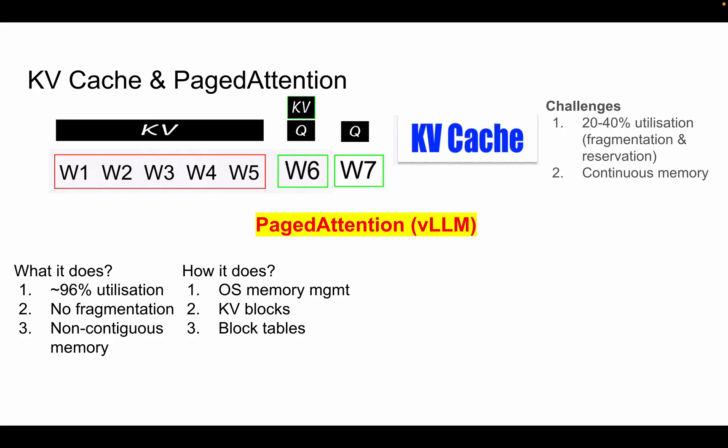Coming back to our topic, we also know how our operating system works, and we can map the KV cache challenges back to OS concepts. KV cache is part of memory, and the challenges we face are really about memory management. If you remember OS concepts, we have pages, blocks, page tables, processes, and a lot of related concepts. The folks who worked on PagedAttention went back to the basics of how an operating system works and applied those concepts to the KV cache problem — and that's what gives us VLLM.